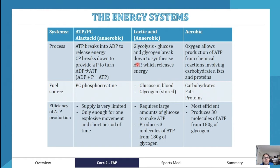The fuel source for the ATP-PC system is creatine phosphate, because we use it to go from ADP to ATP. The efficiency of ATP production is very limited — only enough for one explosive movement and a short period of time. You can guess the types of sports that use this: sports that are short and require explosive movement.